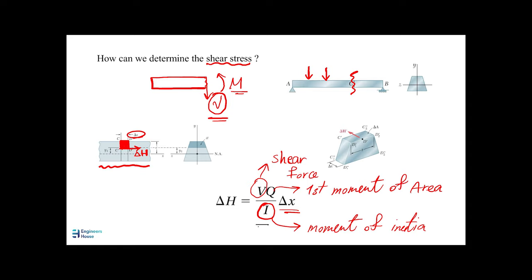To find out the shearing force, we need to calculate these factors. Q is the first moment of area, but for which portion? I is the centroidal moment of inertia of the entire cross-section. The Q must be computed about the neutral axis, which is where there is no bending stress, and we have determined its location in previous chapters. The Q area corresponds to the portion where we need to find the shear stress.